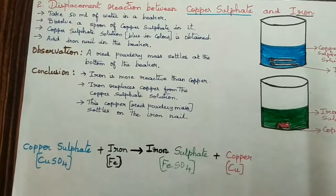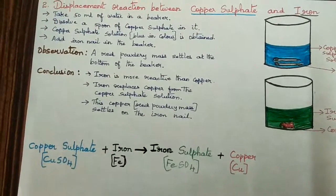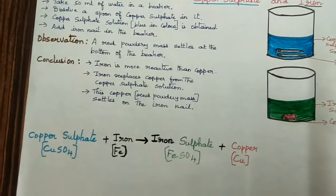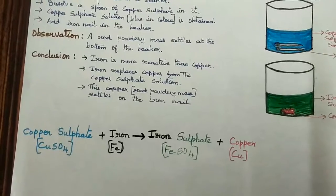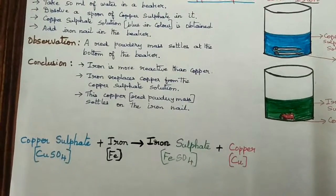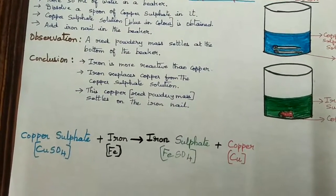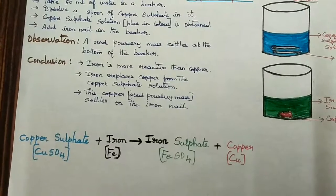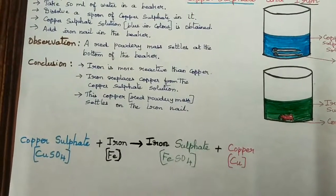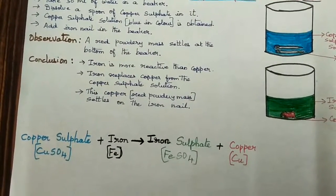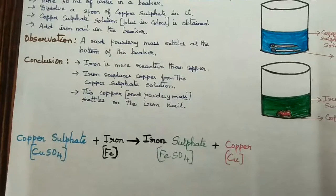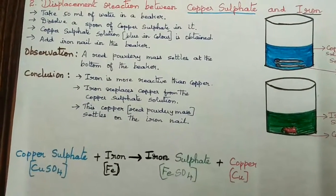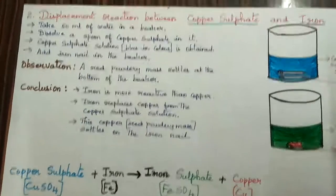What is the observation? A red powdery mass settles at the bottom of the beaker. The conclusion: iron is more reactive than copper. Iron replaces copper from the copper sulfate solution. This copper, which is the red powdery mass, settles at the bottom of the beaker on the iron nails.